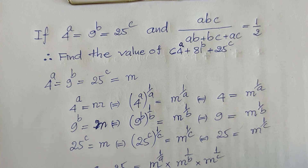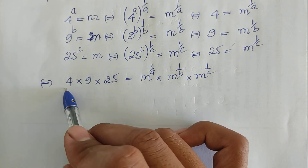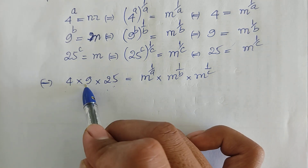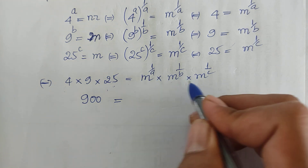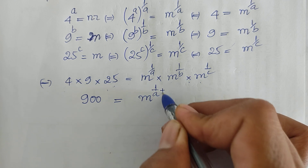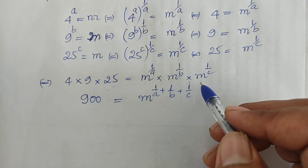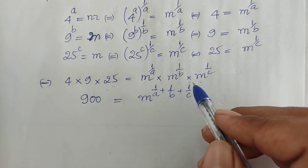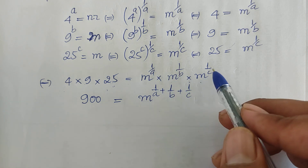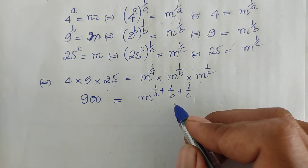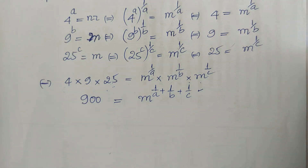So 4 · 9 · 25 equals M^(1/A) · M^(1/B) · M^(1/C). Now 4 · 25 = 100, and 100 · 9 = 900. Since we multiply powers with the same base, we add exponents, giving us 900 = M^(1/A + 1/B + 1/C). Now we must find the value of 1/A + 1/B + 1/C.